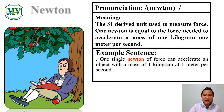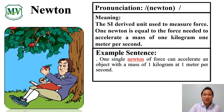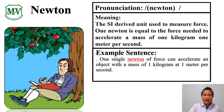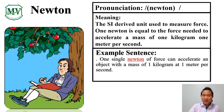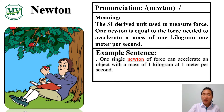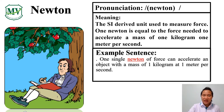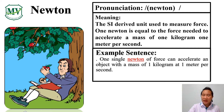Next word: Newton. N-E-W-T-O-N, Newton. Newton is the SI derived unit used to measure force. One Newton is equal to the force needed to accelerate a mass of one kilogram, one meter per second. Example sentence: one single Newton of force can accelerate an object with a mass of one kilogram at one meter per second.